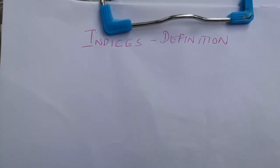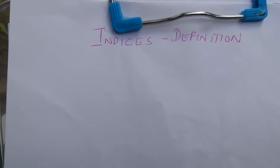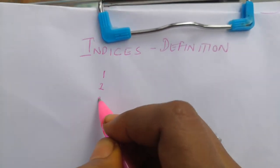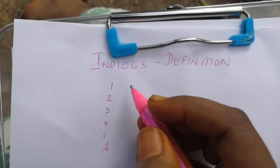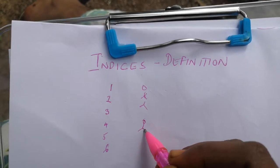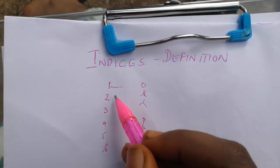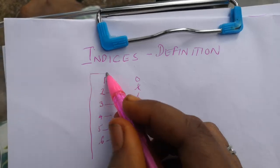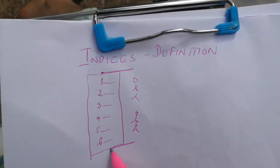In this video I will give you a tip on how to remember the definition of indices with a diagram. Indices has been defined as the numerical value describing the relative status of the population on the graduated scale with definite upper and lower limit.